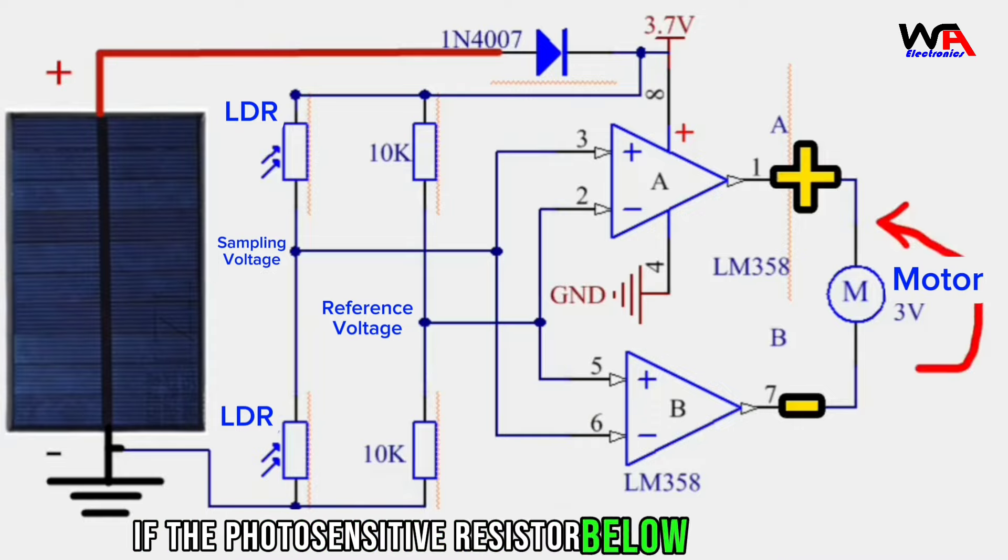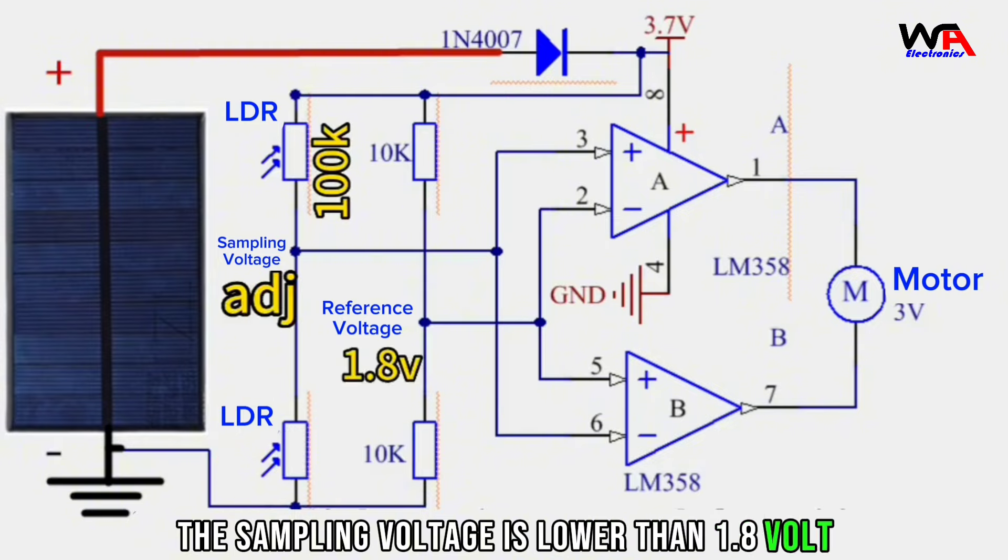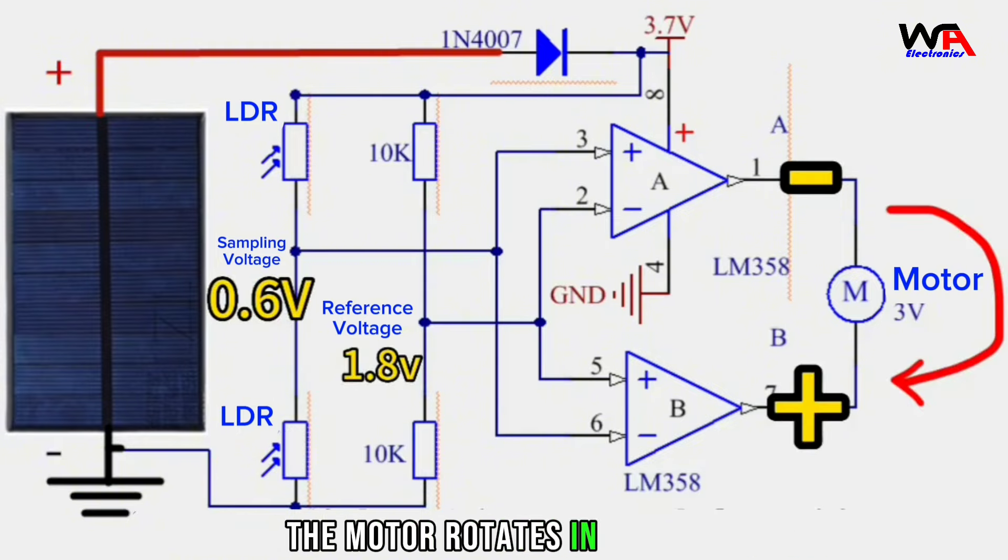If the photosensitive resistor below becomes low, the sampling voltage is lower than 1.8 volts. The motor rotates in reverse.